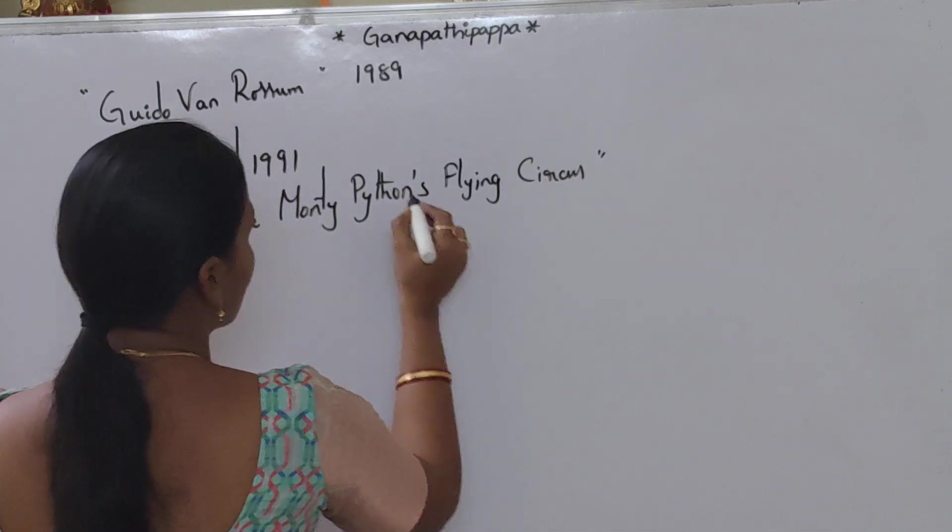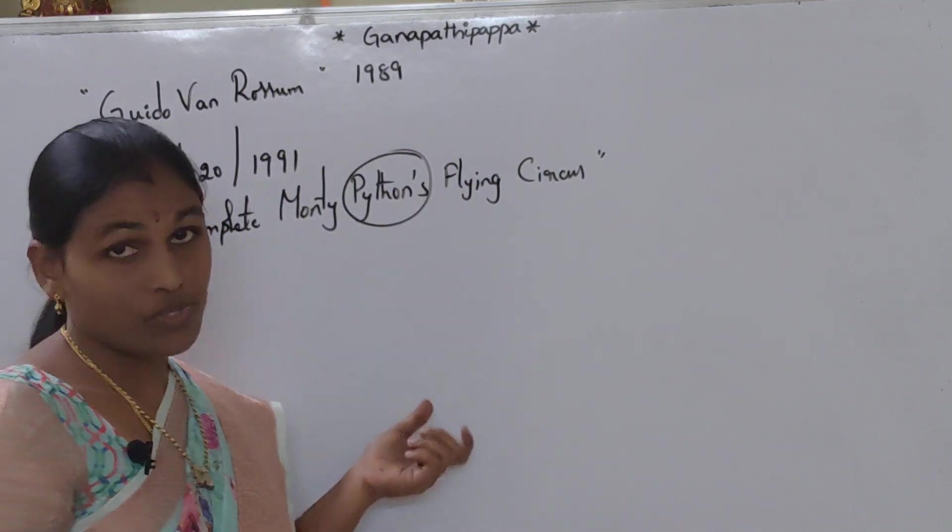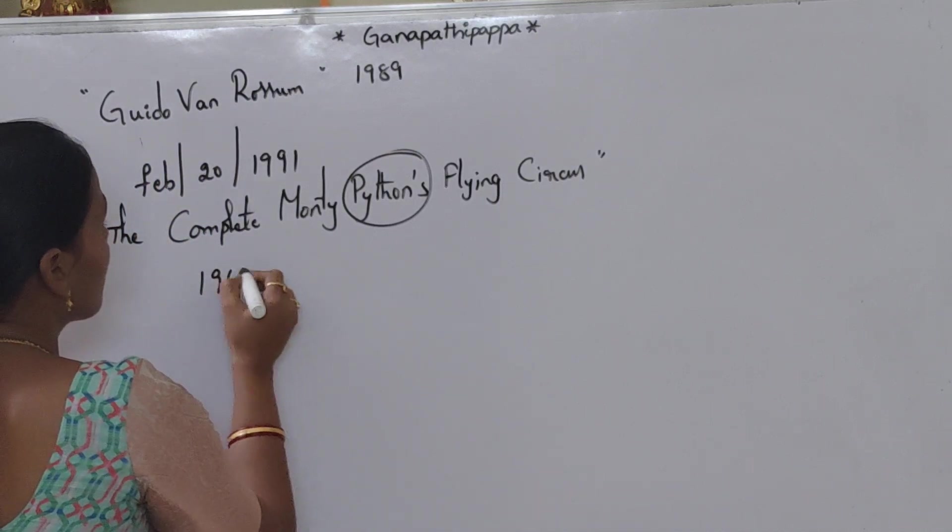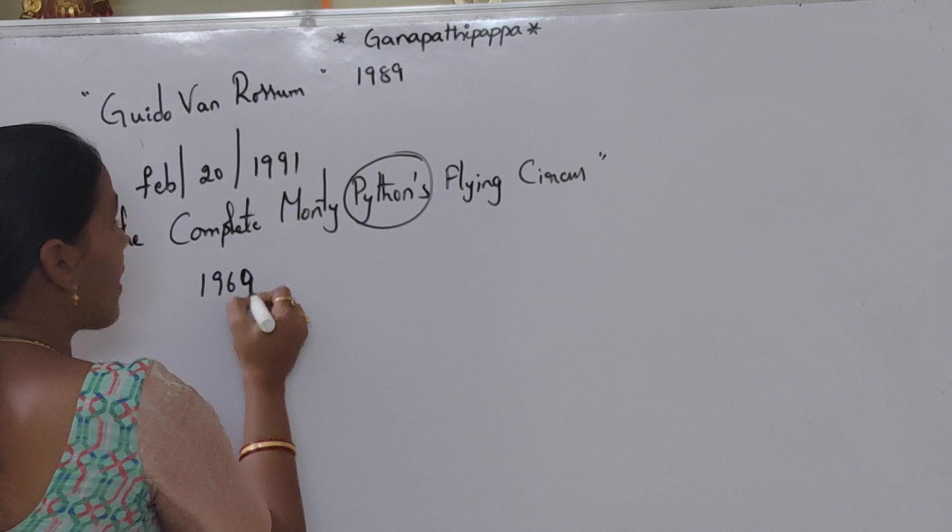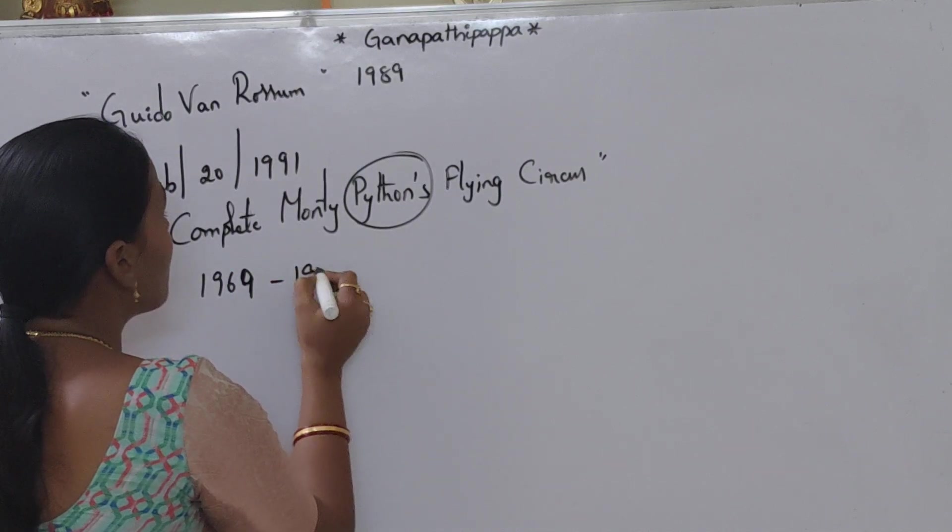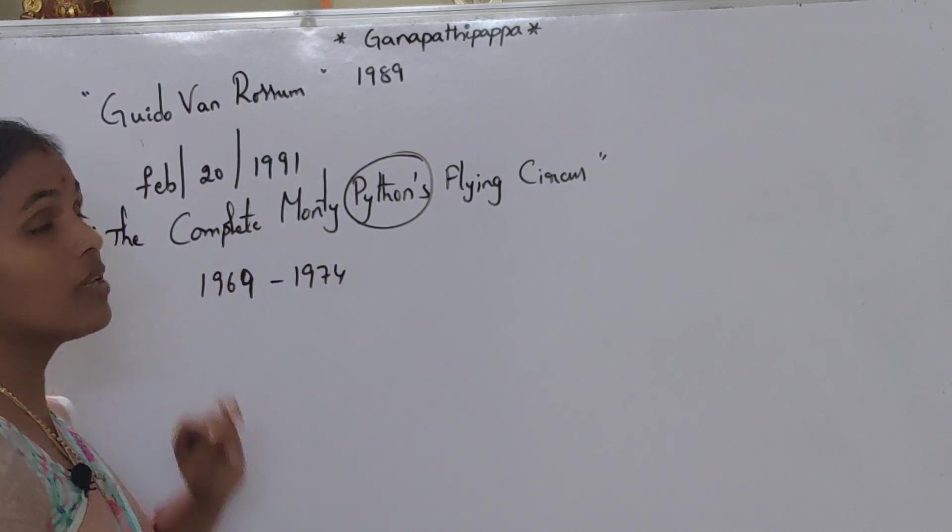Flying Circus, which was broadcasted in BBC's channel from 1969 to 1974. This is the duration of the TV show.